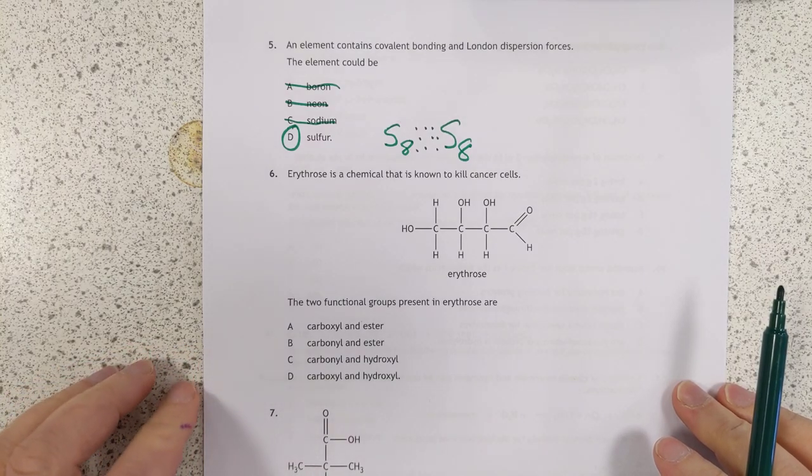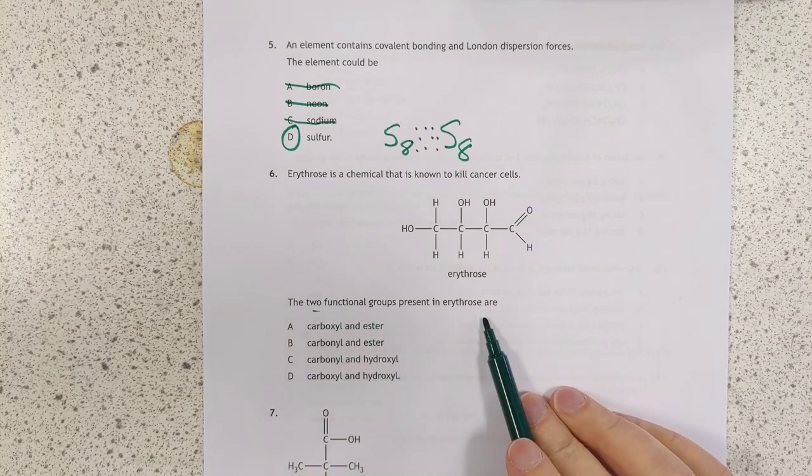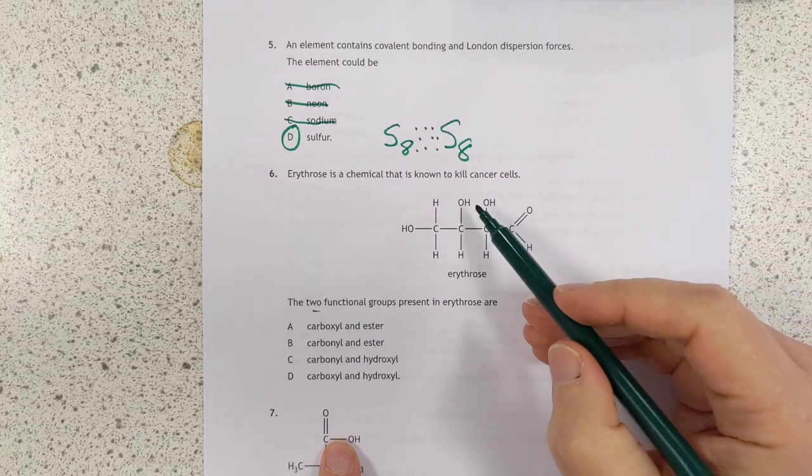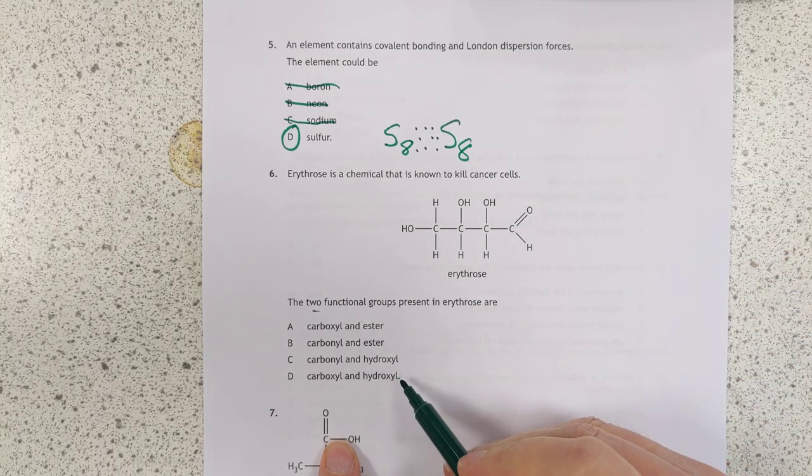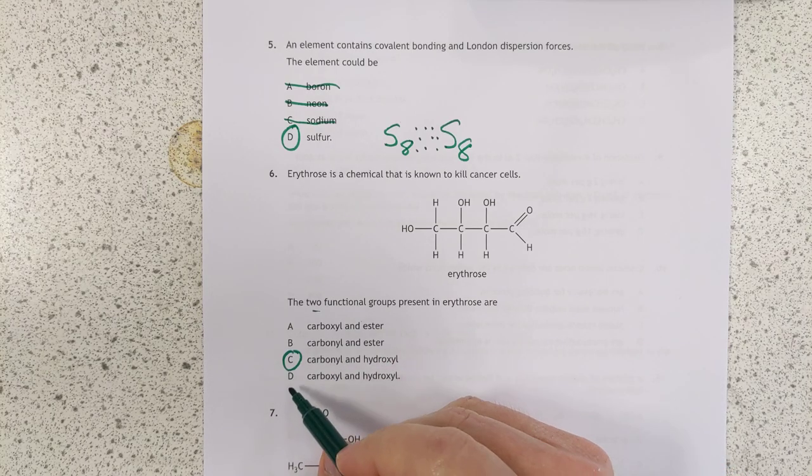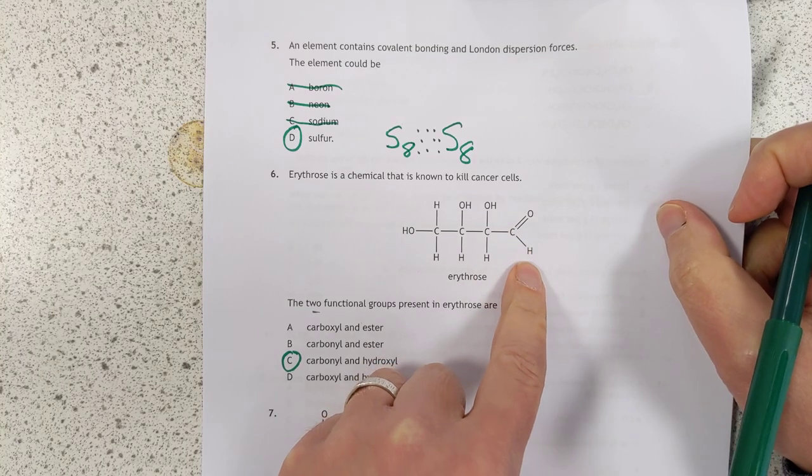Number 6. Erythrose is a chemical that's known to kill cancer cells. The two functional groups present are... Well, I'm seeing hydroxyl groups, and I'm seeing a carbonyl group. So I'm going to go with C. Trying to trick you there with carboxyl, but it's not OH, it's just H.